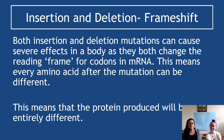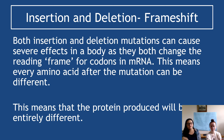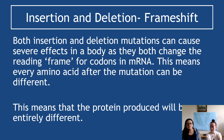Both insertion and deletion mutations can cause severe effects because they both change the reading frame for codons. mRNA needs to be read in triplets — groups of three — and mRNA is a copy of DNA. If you've got one extra nucleotide, every codon read after that point is going to be different, shifting the reading frame for that particular protein. Equally, with a deletion mutation, all the letters move one place over, meaning the reading frame entirely shifts, and the protein produced at the end can be entirely different. Insertion and deletion mutations can therefore lead to the frame shift effect.